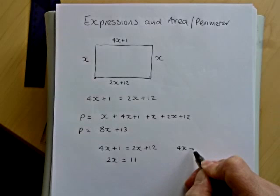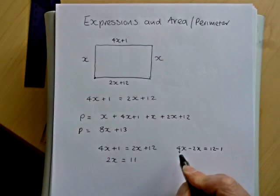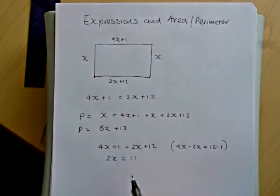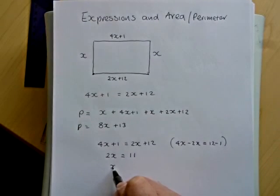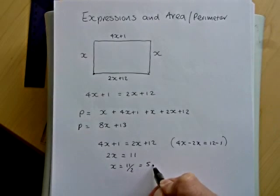So I'll just quickly put the intermediate step in there, equals 12 minus 1. So just in case you didn't understand, that's what I've done before I've moved to this. So 2x equals 11, so x will equal 11 divided by 2 equals 5.5.